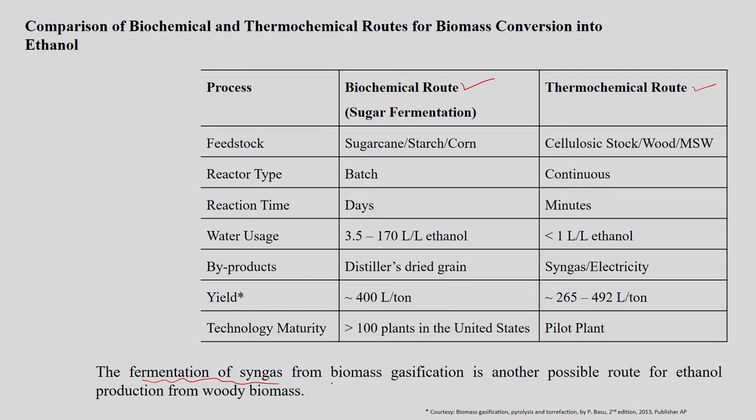Two different technologies are available for ethanol production — fermentation being the major step for converting syngas or simple sugars into ethanol. However, very limited information is available about the syngas fermentation process and complete process analysis is lacking. As a result, biomass-derived syngas to ethanol technology is still at pilot scale.